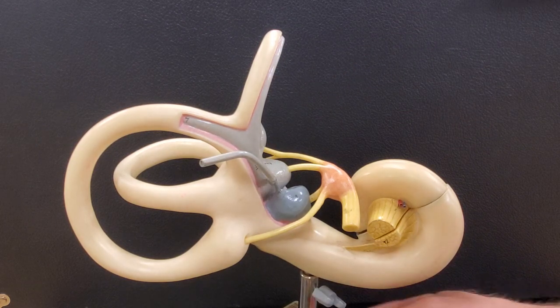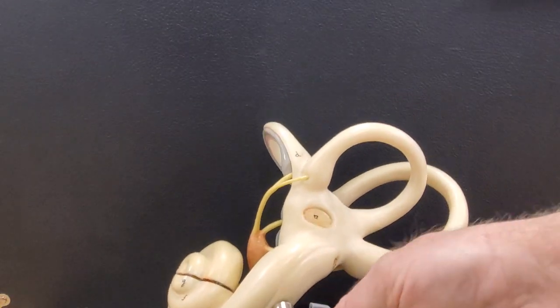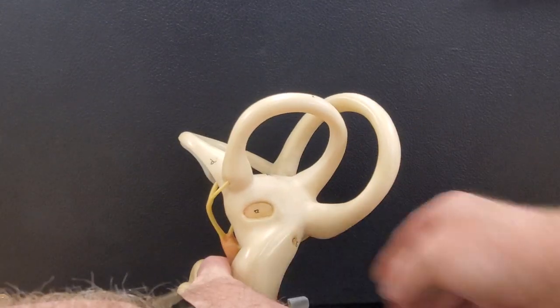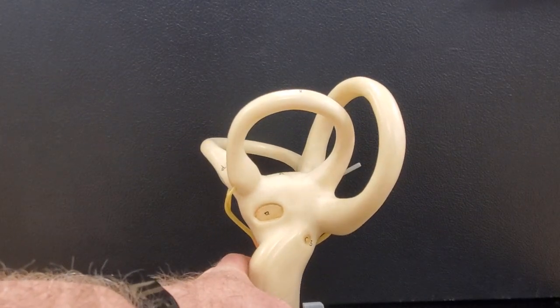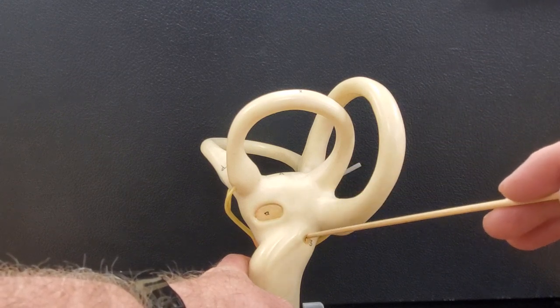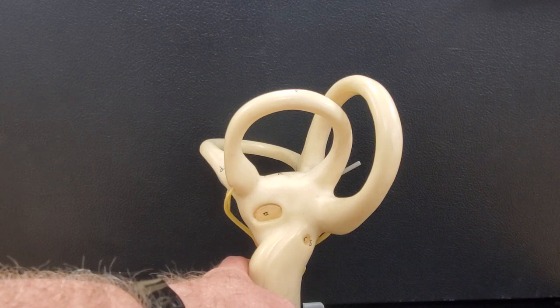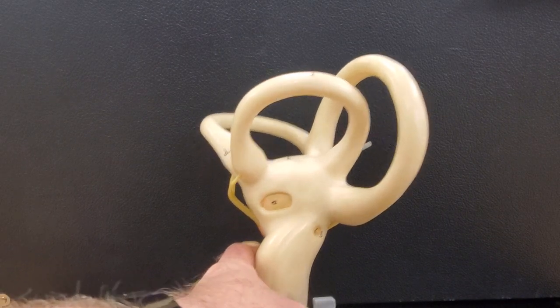Now, if I take the model and I lay it on its side, or I look at it this way, there are two openings down here. There are two openings. This opening is called the oval window, and this opening is called the round window. The oval window is oval. Round window is round. Got it?